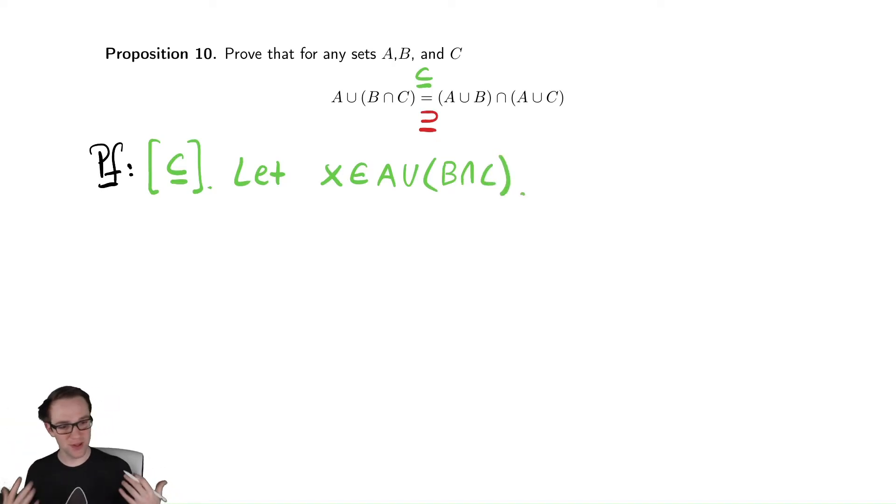And then, I usually refer to this as unwinding the definitions. I just start with the outermost thing in parentheses and say, what does that tell me? If it's in a union, that means it's either in A or in the B intersect C. So, either x is in A or x is in B intersect C.